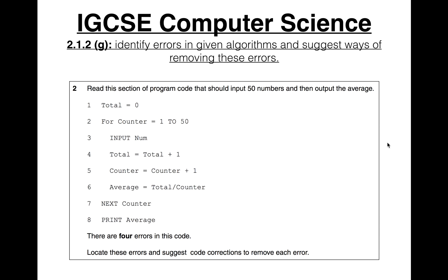It should input 50 numbers and output the average, so you can think about how to write that in pseudocode. Sometimes, although it says 'suggest code corrections,' some code may need to be removed or moved to a different line. In that case, you don't need to write everything out — you can just say this line needs to be moved or this line needs to be removed.